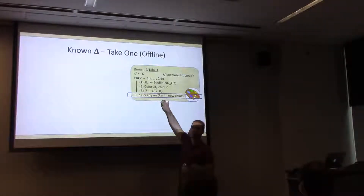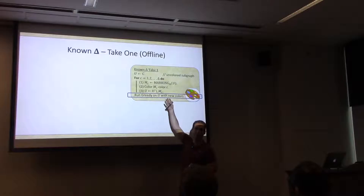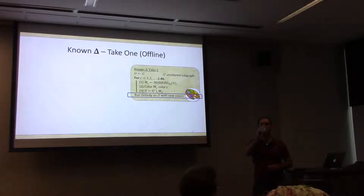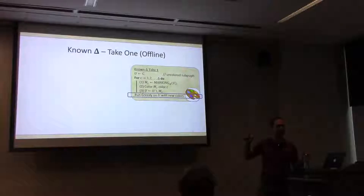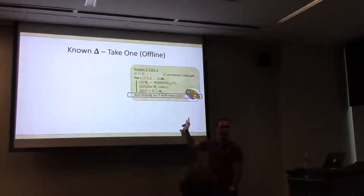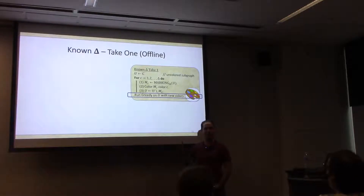This doesn't at all look like an online algorithm. Let me explain how to implement this offline, and then get back to how we do this online. We simulate vertex arrivals: left nodes are offline, right nodes are online. Initially the uncolored graph is the entire graph. We forget that we know all right nodes and their edges, bring them in one by one, and run the next step of algorithm Marking-Delta.